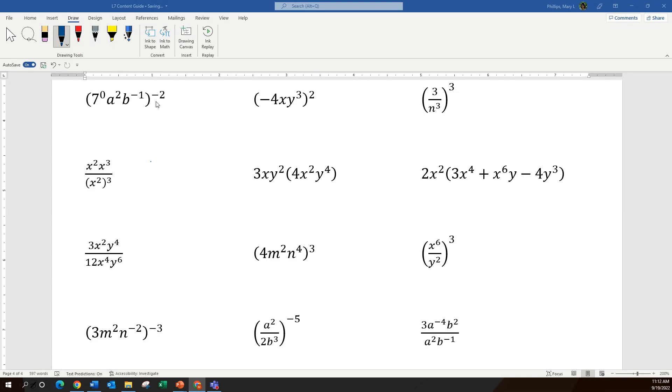For our first example, we see exponents inside and outside the parentheses. Our rule tells us that we should be multiplying these. It works like a distributive property. We need to multiply times each piece.